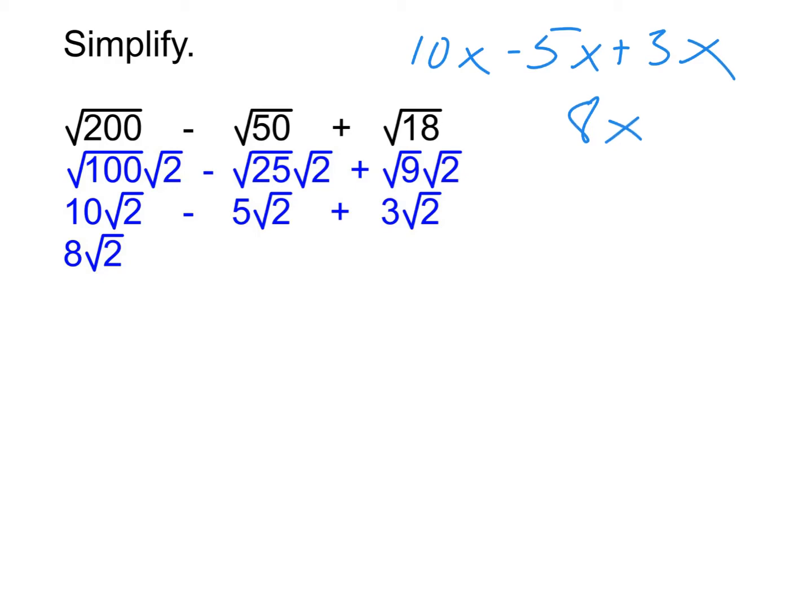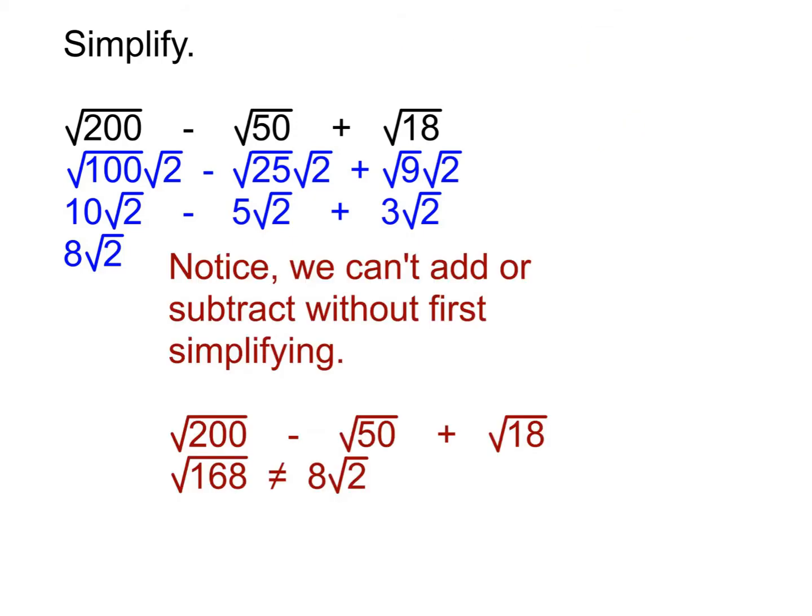Now, one thing I do want to mention, though, make sure you get out of this. Notice that we can't just add or subtract without first doing that simplifying process. If I did that, if I did the 200 minus the 50 plus the 18, that would give me 168. The square root of 168, though, does not equal 8 root 2. So no, that is not an option to just kind of try to shortcut it that way. We have to simplify first and then only add or subtract the ones that are like terms.